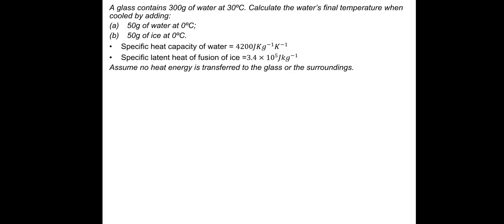A glass contains 300 grams of water at 30 degrees Celsius. Calculate the water's final temperature when cooled by adding 50 grams of water at zero degrees Celsius. What we need to understand is that when we mix these two waters they're going to reach a final temperature — they're going to be in equilibrium with each other at the same temperature.